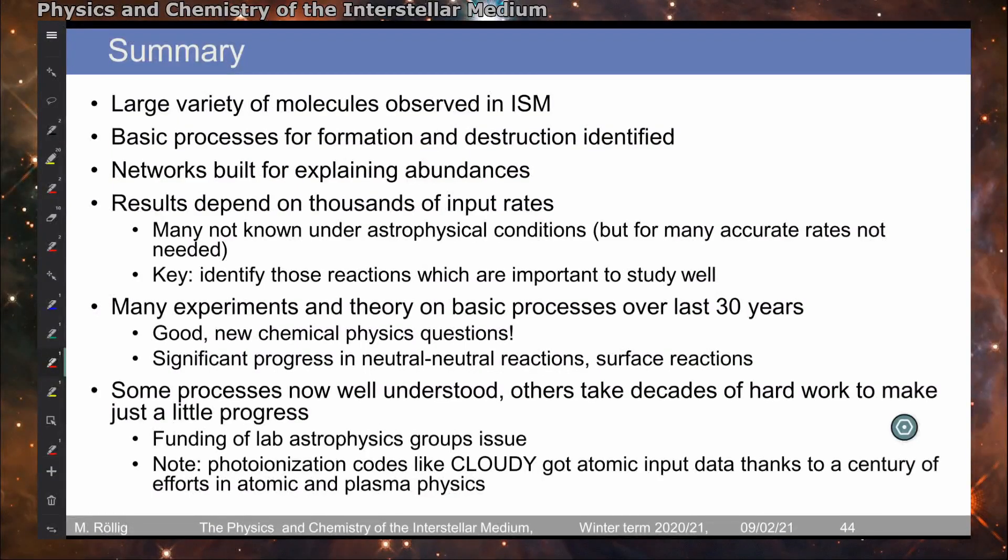So summarizing, we find a large variety of molecules that are observed in the ISM. And the basic processes of their formation and destruction have been identified and networks, chemical networks have been developed to actually explain the abundances qualitatively and quantitatively. However, there are many uncertainties involved because our knowledge on all the important inputs is still incomplete. So we need many more experiments and many more modeling to actually get to a good understanding, even though we made tremendous steps forward over the last 30 years. So it's very important to combine astrophysical modeling, astronomical observations and lab astrophysics experiments to actually reach a full picture.